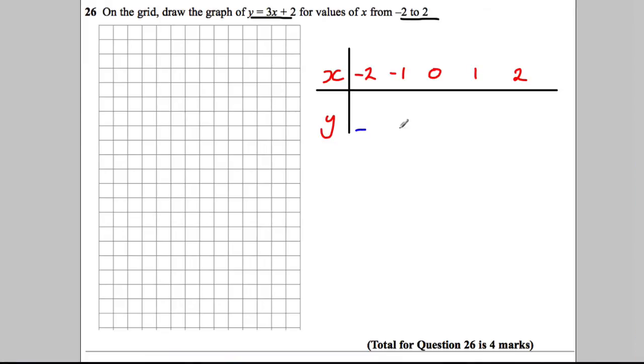Now don't worry about working out the y values for negative. Do it for the positives and watch what happens. If you put in x is 1 in here, 3 times 1 is 3, add 2 is 5.